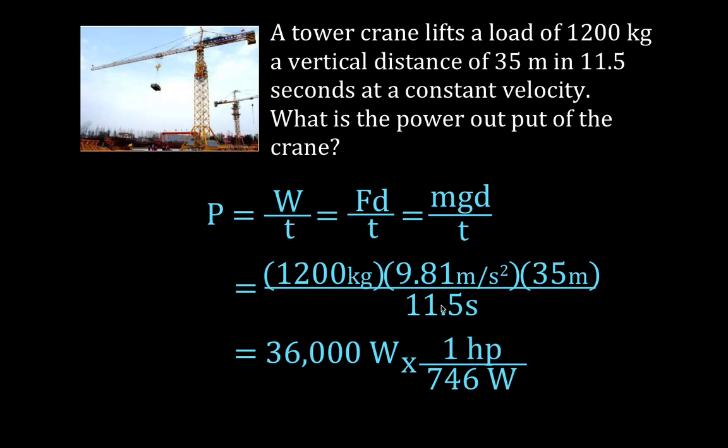We're going to convert from horsepower to watts. 1 horsepower is 746 watts. We take this value, multiply it by 1 if you need to, divide it by 746, and you get that the horsepower of that crane, the power output of that crane expressed in horsepower, is 48 horsepower.